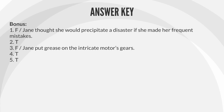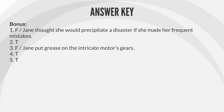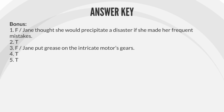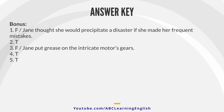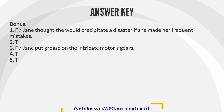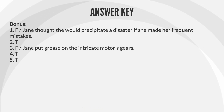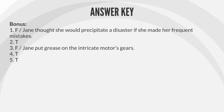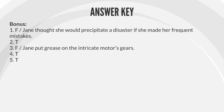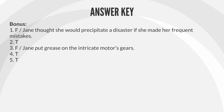Bonus — True/False answers. 1. F — Jane thought she would precipitate a disaster if she made her frequent mistakes. 2. T. 3. F — Jane put grease on the intricate motor's gears. 4. T. 5. T.